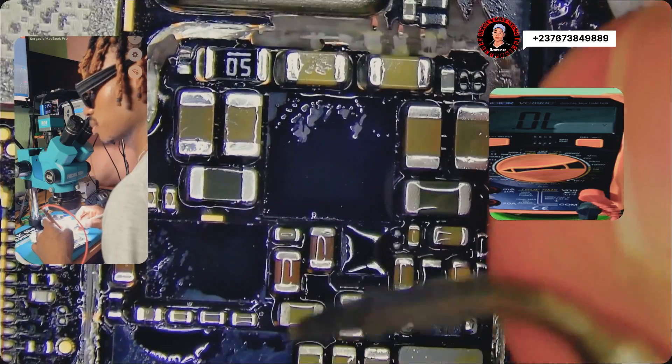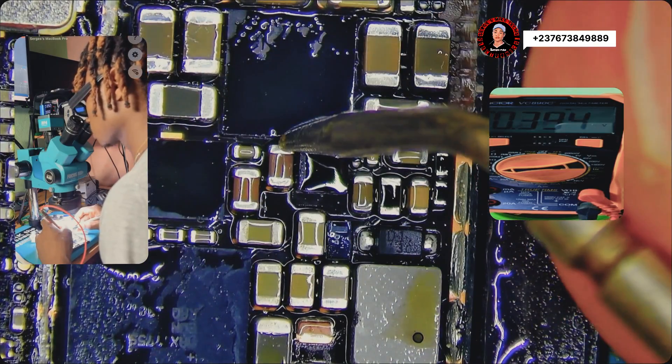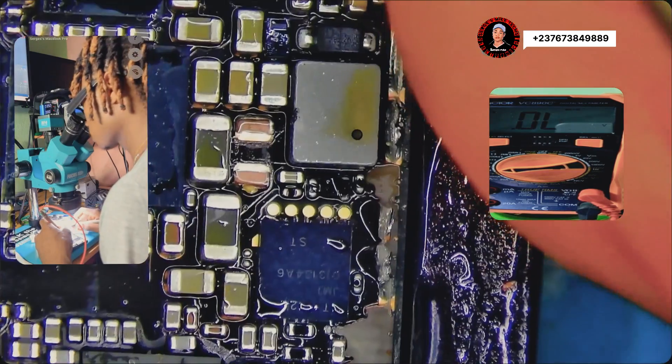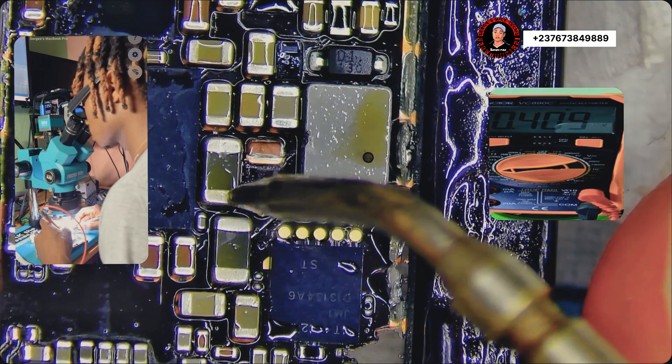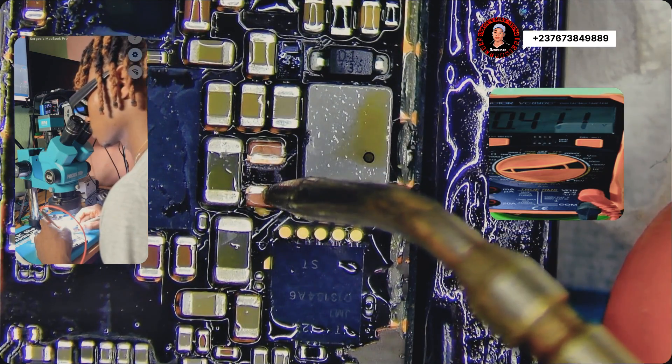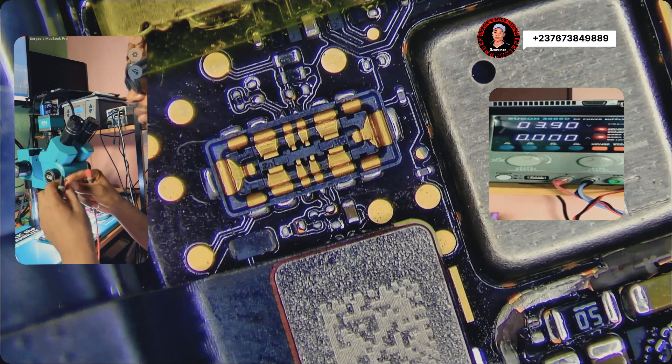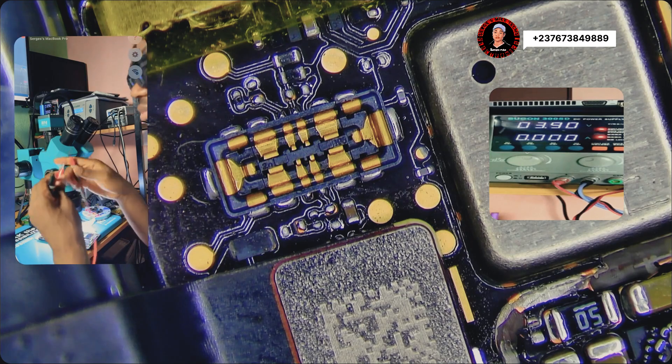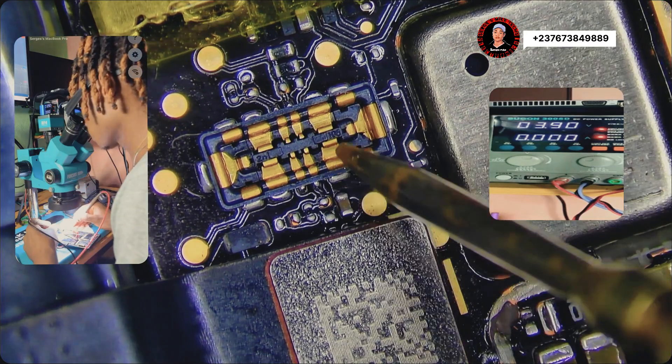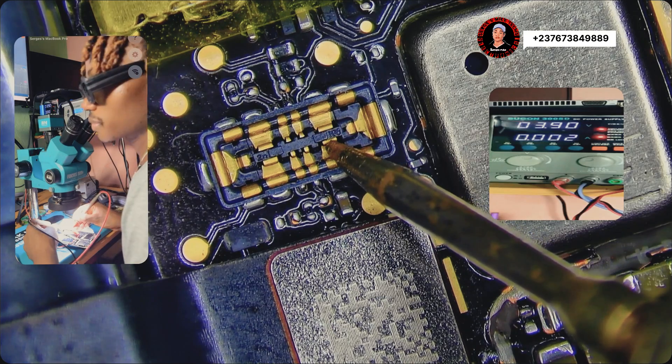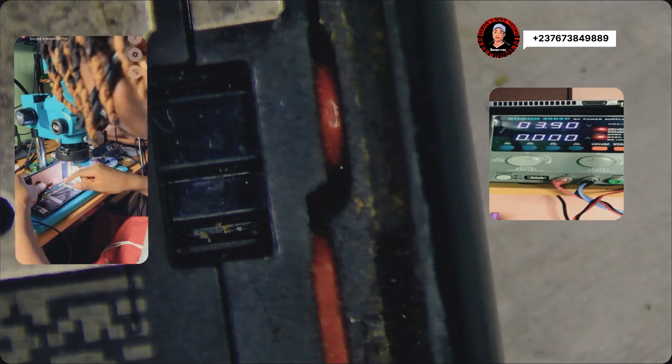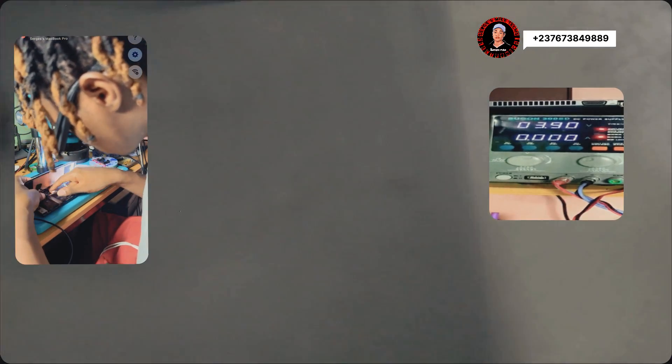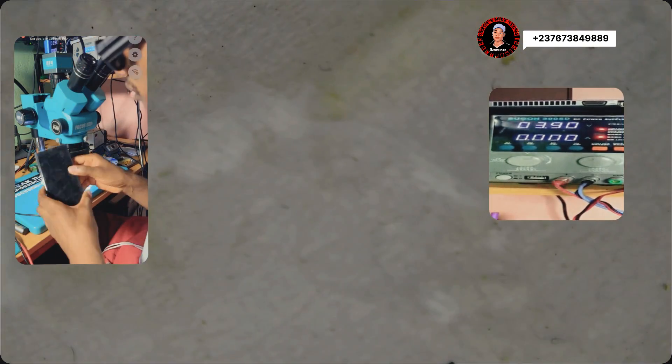As you can see, that's a correct reading, no short anymore. Check, that's a correct reading. There is no short here. I went back to the battery connector using my DC power supply to check if there is any current leakage again, and that's a perfect reading. Let's just mount the screen and test to see if we solved this problem.